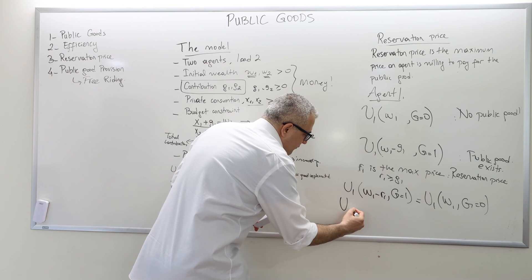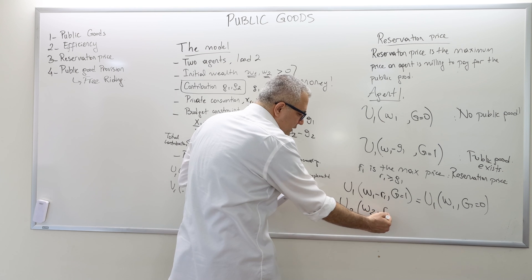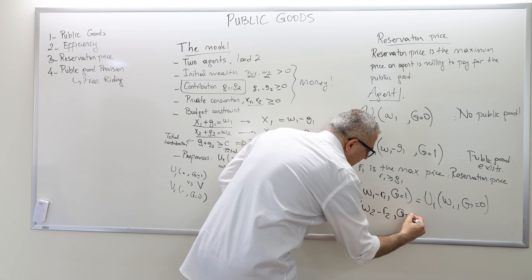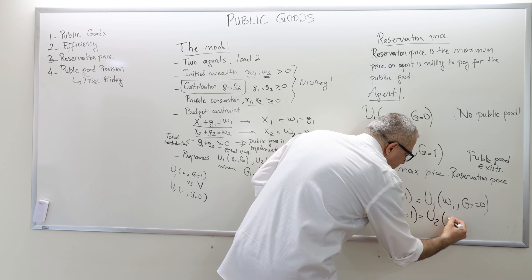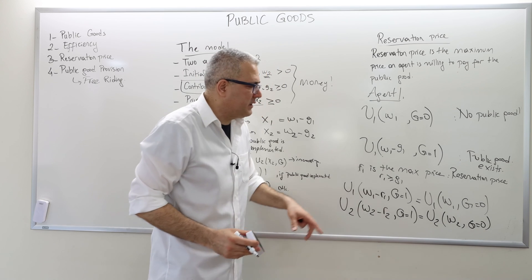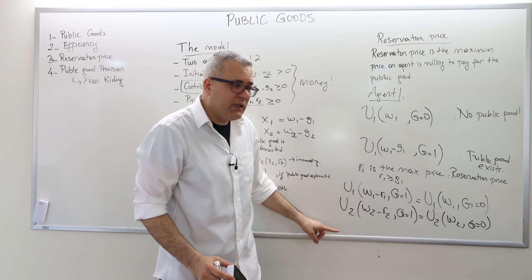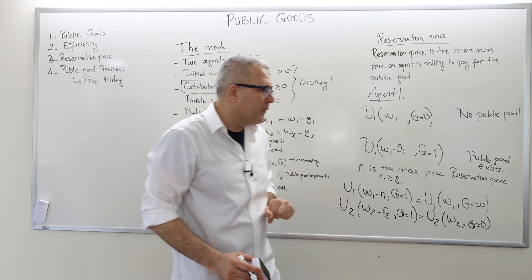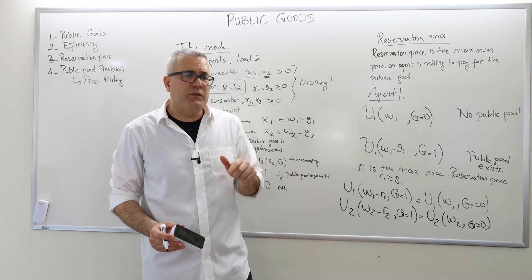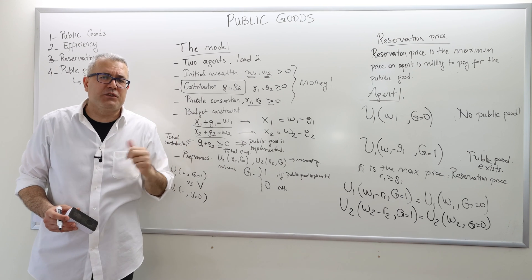For agent two, exactly the same thing. In order to calculate her reservation price, her wealth minus her reservation price — which tells us her private consumption when she has the public good — her utility should be equal to her utility level when she doesn't spend any money on the public good because there is no public good. The R2 satisfying this equality is going to be the reservation price for agent two. The video is already long enough, so let's pause here, and in the next video I'm going to talk about how we use this concept of reservation price to explain whether a project is efficient or not.